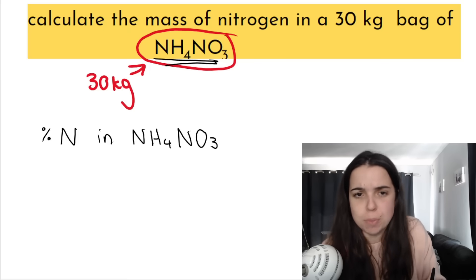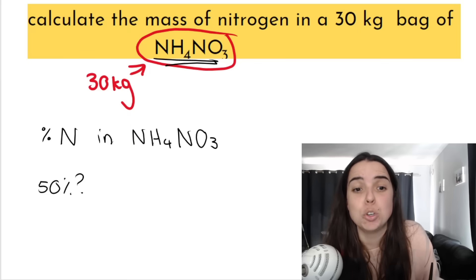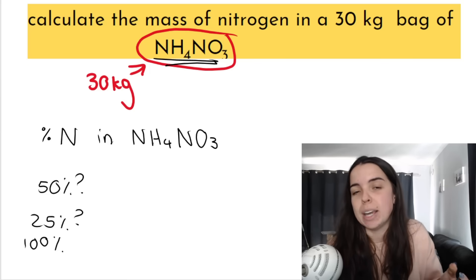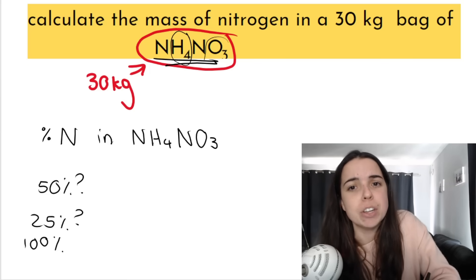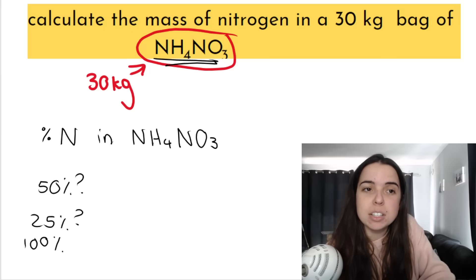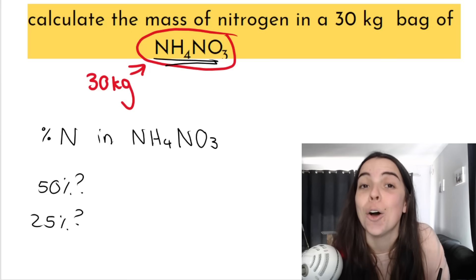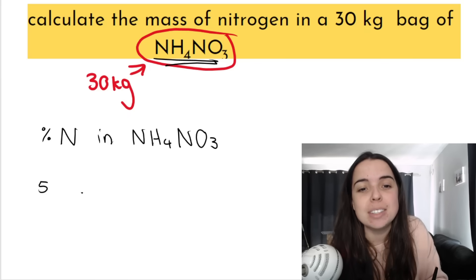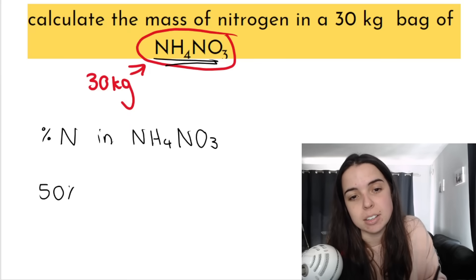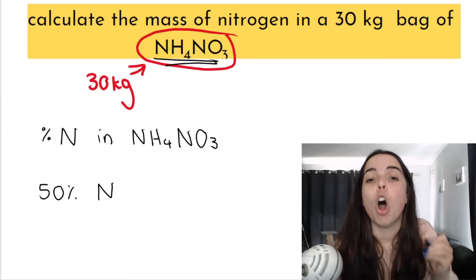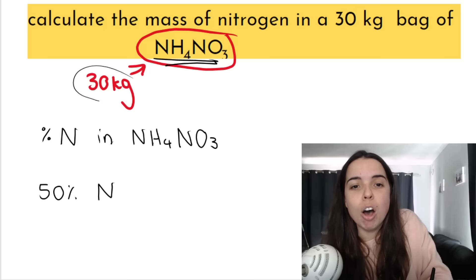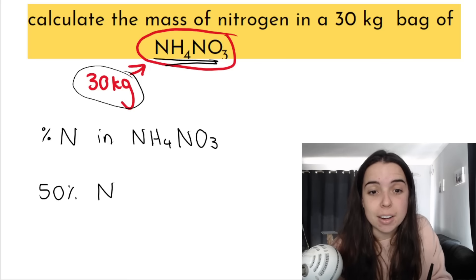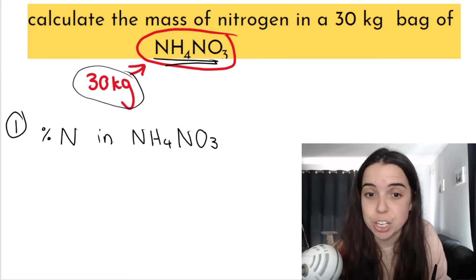Does nitrogen make up 50% of the compound? 25%? Definitely not 100% — there's hydrogen and oxygen too. But if we know the percentage of the compound that is nitrogen, we will then be able to work out the mass of nitrogen. For example, if 50% of the compound were nitrogen, that means half of the 30 kg mass would be nitrogen — which would be 15 kilograms. So step one is to work out what percentage of this compound is nitrogen.